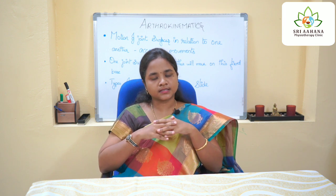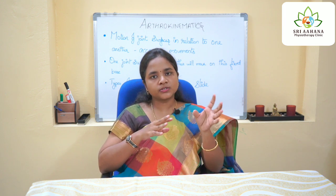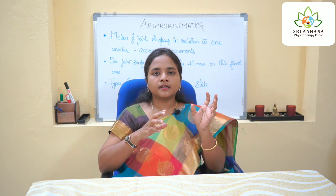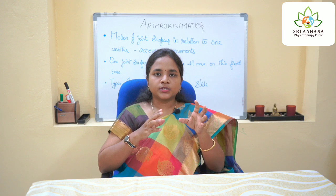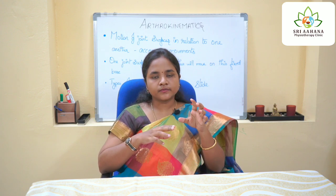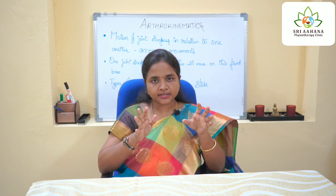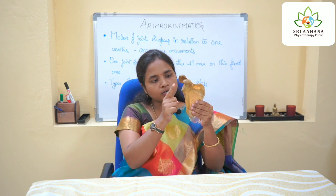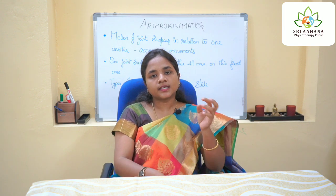When considering articulating surfaces, there are two types of joints: ovoid joints and sellar joints. Ovoid joints are joints in which one surface is concave and the other is convex. For example, in the shoulder, the glenoid cavity remains concave and the head of the humerus remains convex — this is an ovoid kind of joint.